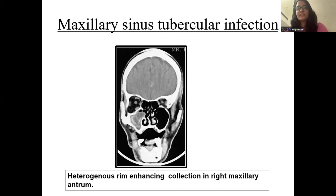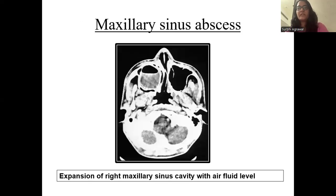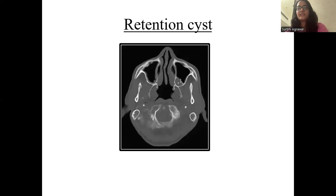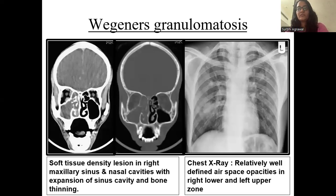Heterogeneous hyperdense collection is seen in the right maxillary sinus, depicting a tubercular infection. Here, maxillary sinus abscess is seen due to expansion of the right maxillary sinus cavity, which is filled with an air-fluid level. Mucocele is depicted in this picture as fluid density appearing homogeneous in the left maxillary sinus with blocked OMC and mild expansion of the sinus cavity. This is a case of retention cyst. Here, Wegener's granulomatosis can be seen as a soft tissue density lesion in the right maxillary sinus and nasal cavities with expansion of the sinus cavity and bone thinning.